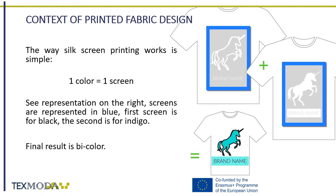In each case, the way silk screen printing works is quite simple. Let's take a t-shirt as an example. For each color to be introduced in the design, a different screen is used. As each screen is set for a color, the design of that color is represented on the screen. The structure will only let the color go through the areas that are open, just like a stencil. The screens are represented in blue: the first screen is for black ink, the second is for indigo ink. Only two screens were necessary for this design, as only two colors were represented. Each screen is made to only let the ink get through the microscopic holes that represent the shapes and forms for each color.